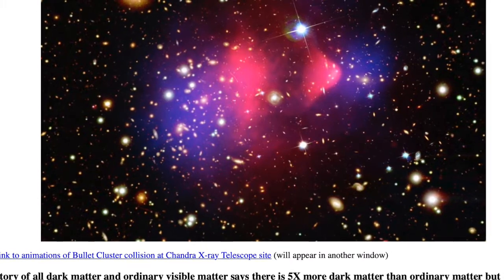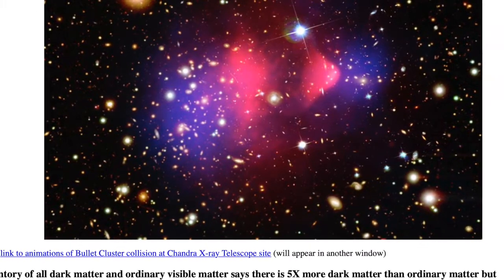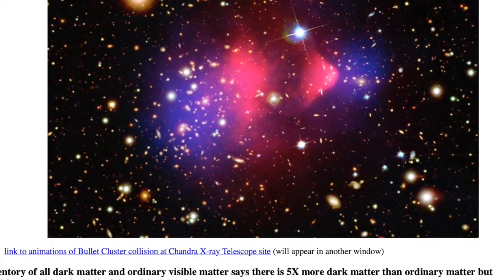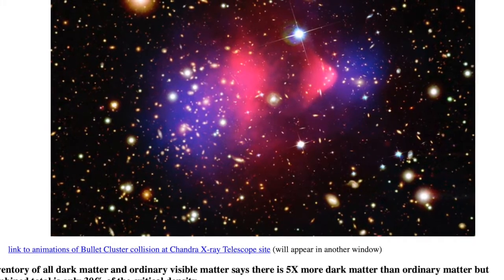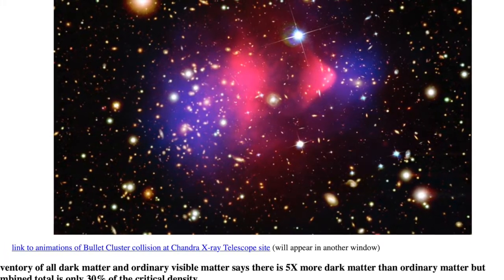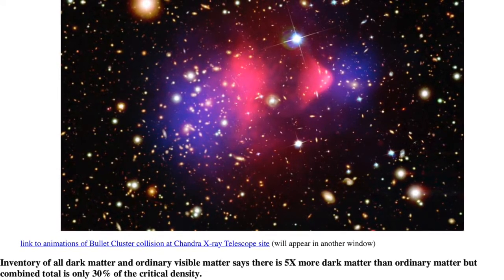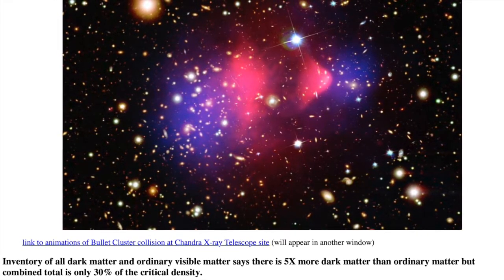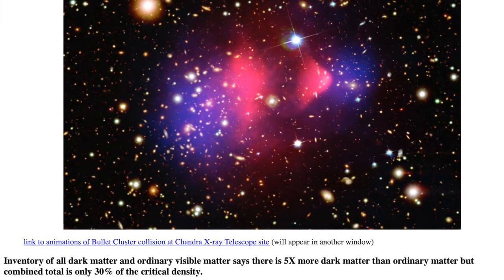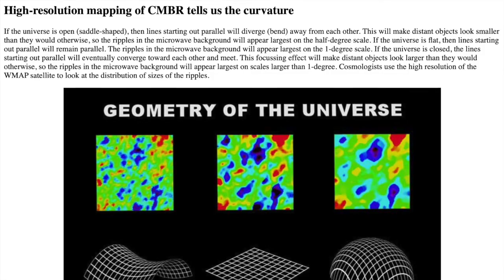Current tallies of the total mass of the universe, visible and dark matter, indicate that there is only 32% of the matter needed to halt the expansion. We live in an open universe. Ordinary matter amounts to almost 5%, and dark matter makes up the other 27%.